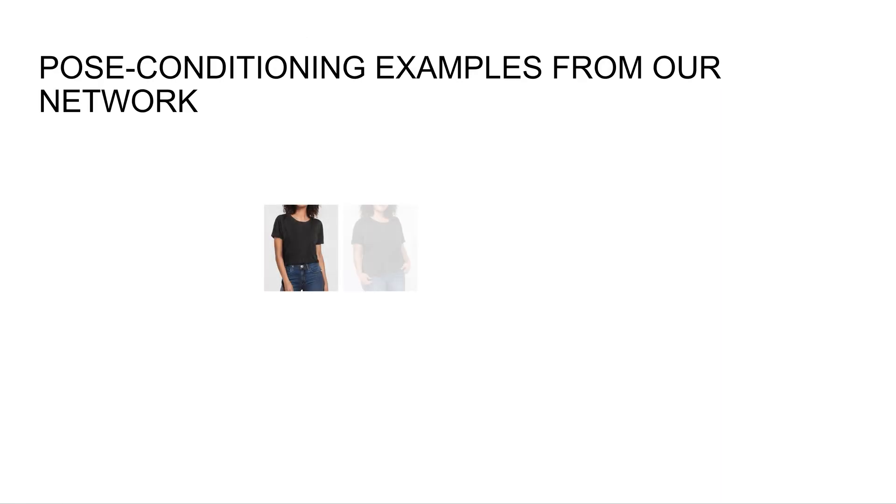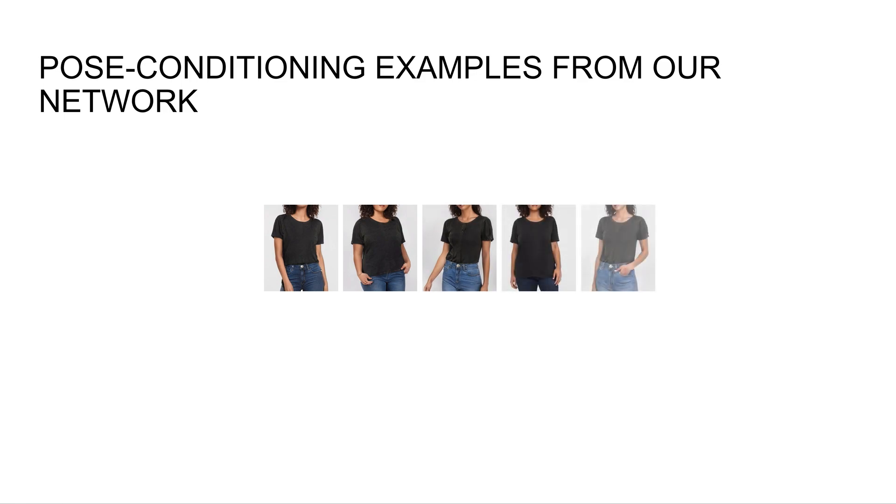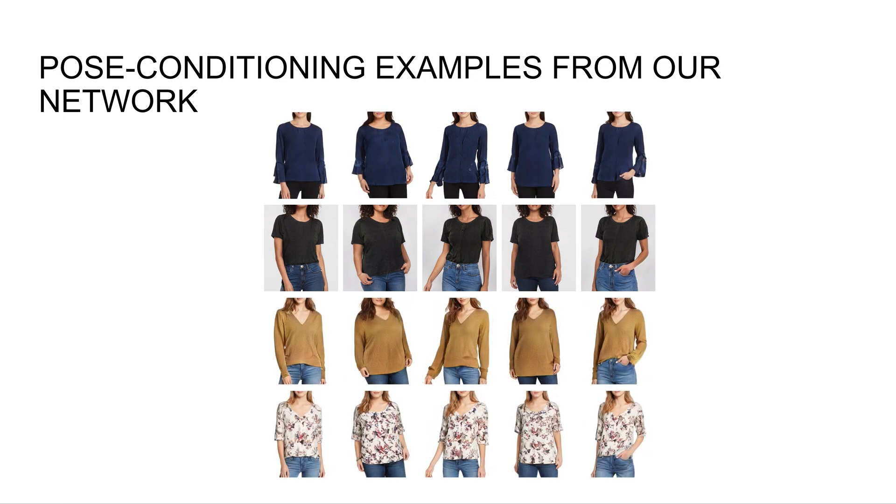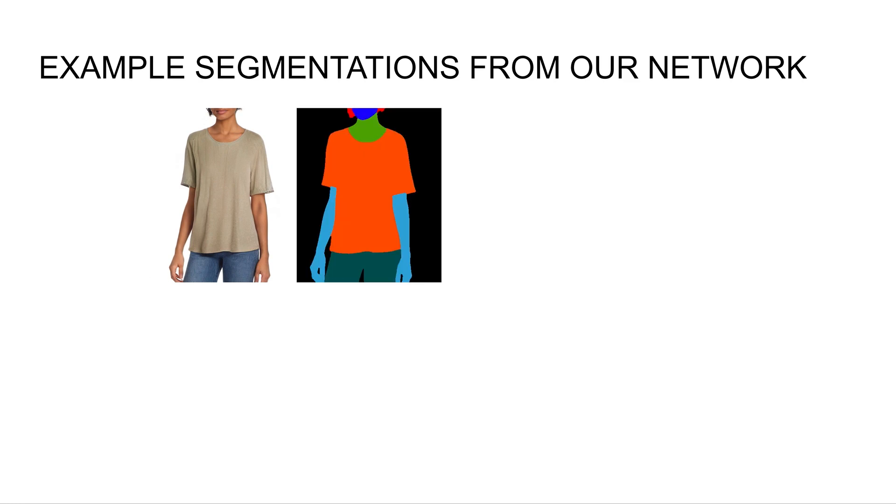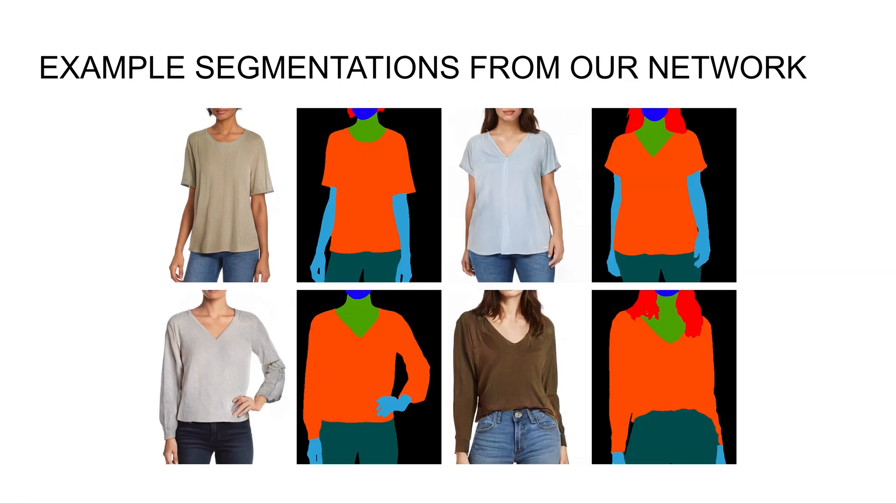Here are some examples of the same style and different poses using our pose conditioning. We can also generate different styles in the same pose. And this works for many different poses, as well as many different shirt types. I'll also show some RGB and segmentation outputs from our network. Our network is able to segment a variety of poses, as well as different shirt types.